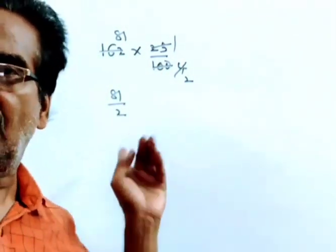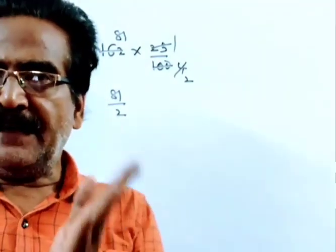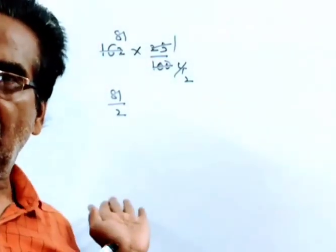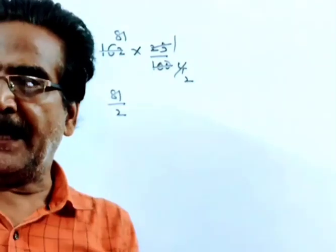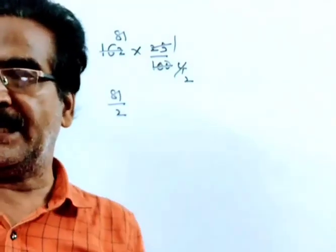This is the fall in the price of X. Friends, because of this fall, a man can get 2 dozen X more.